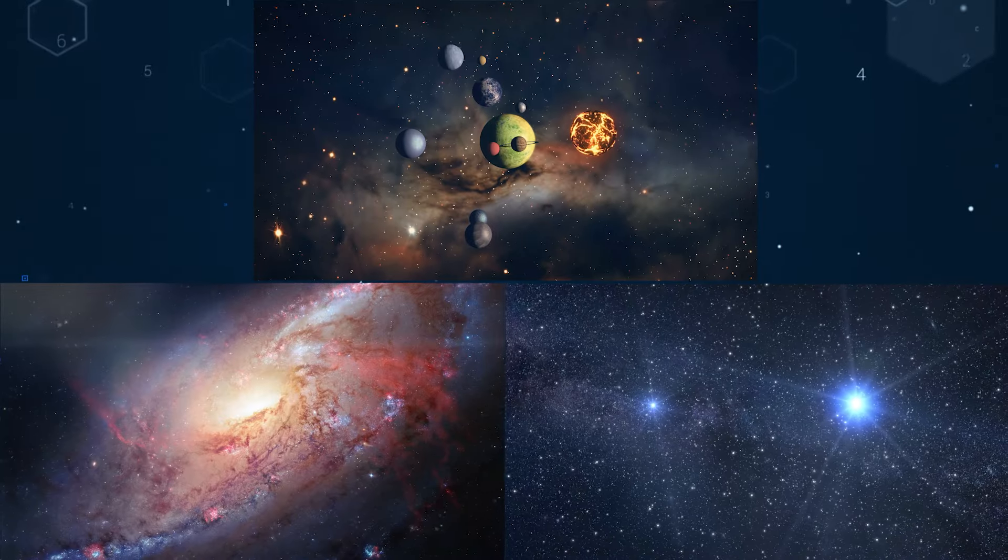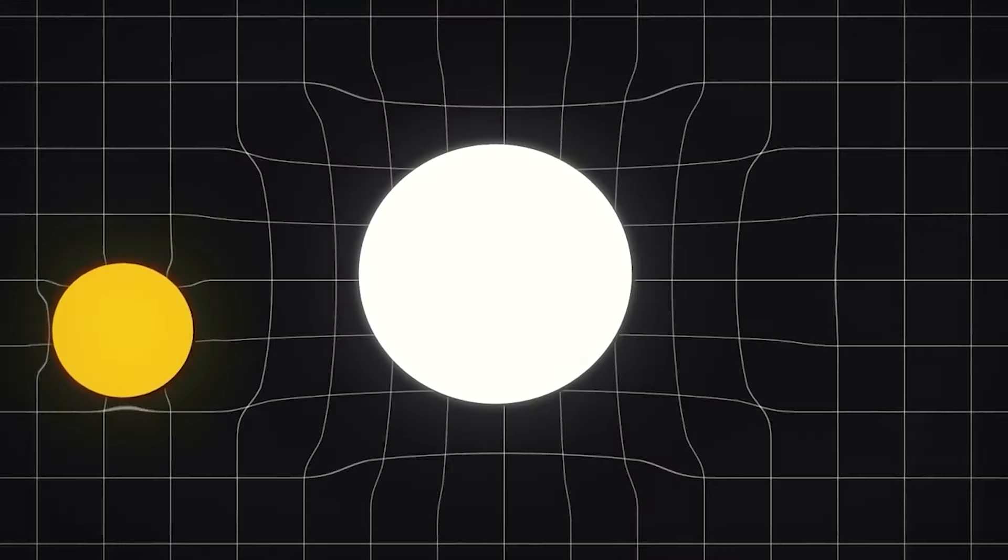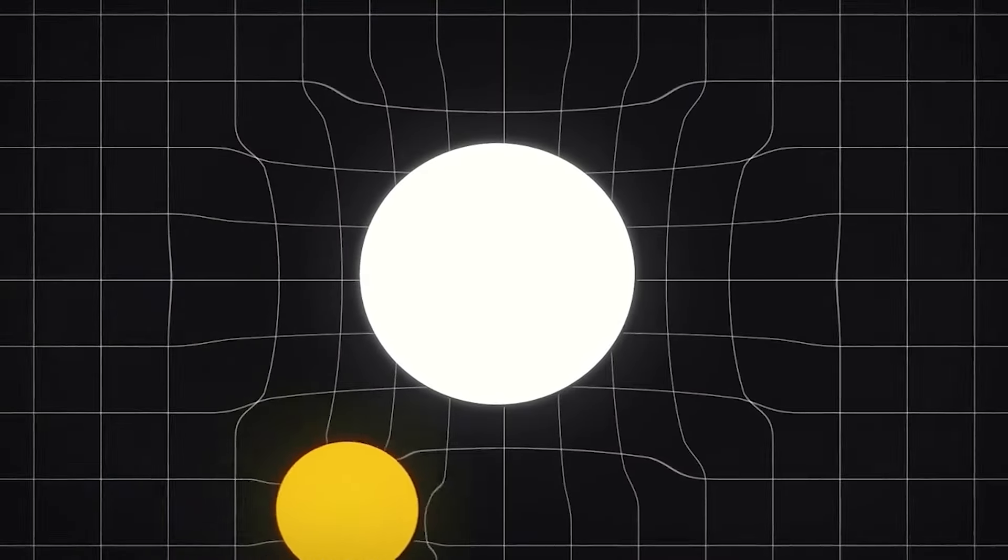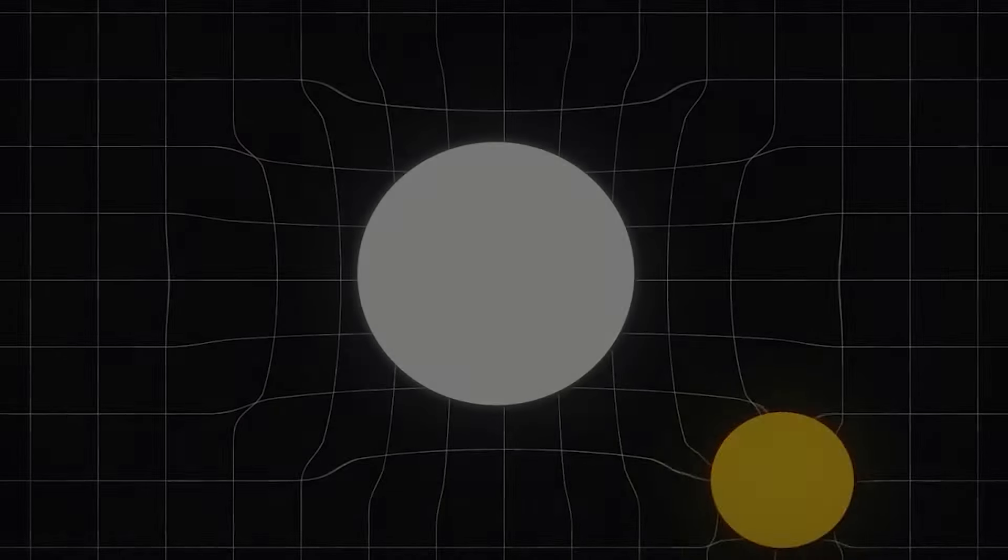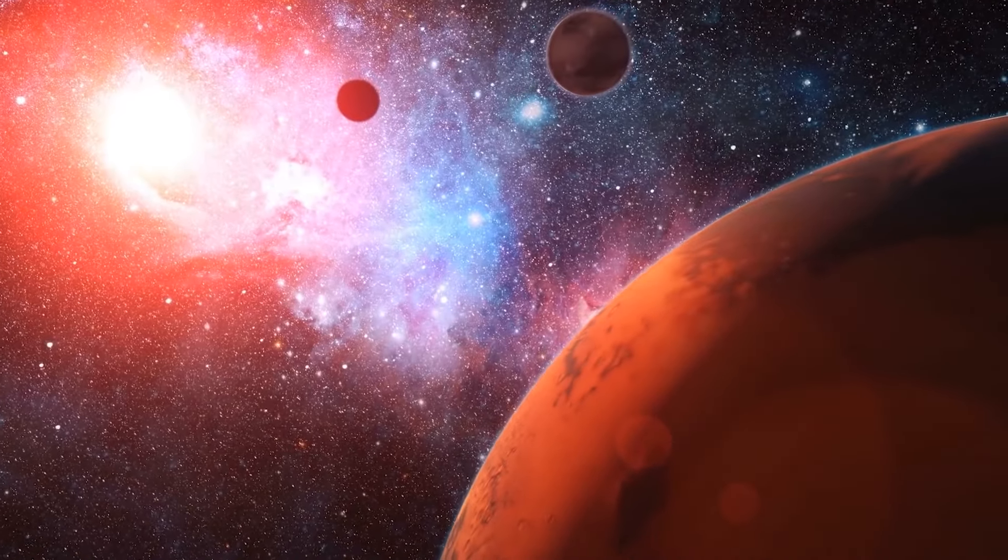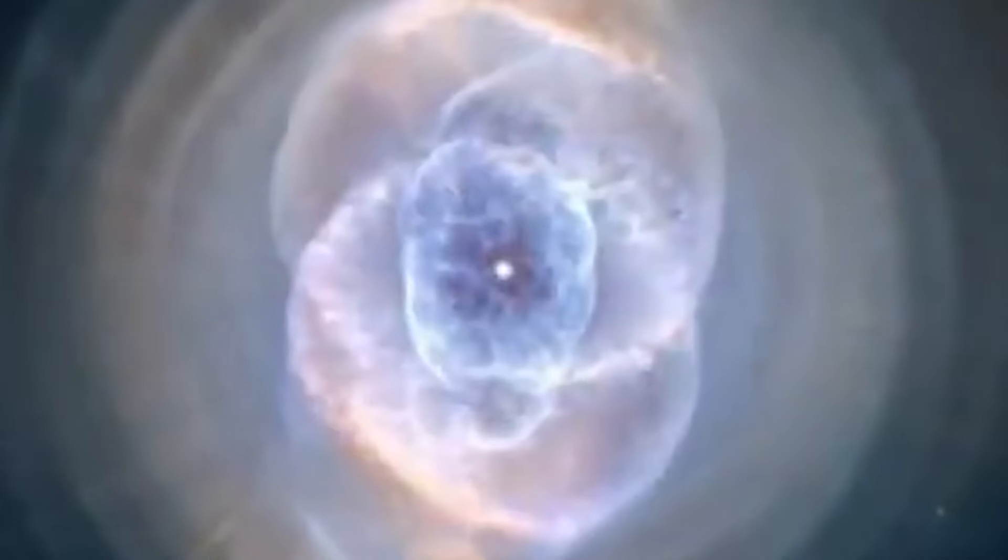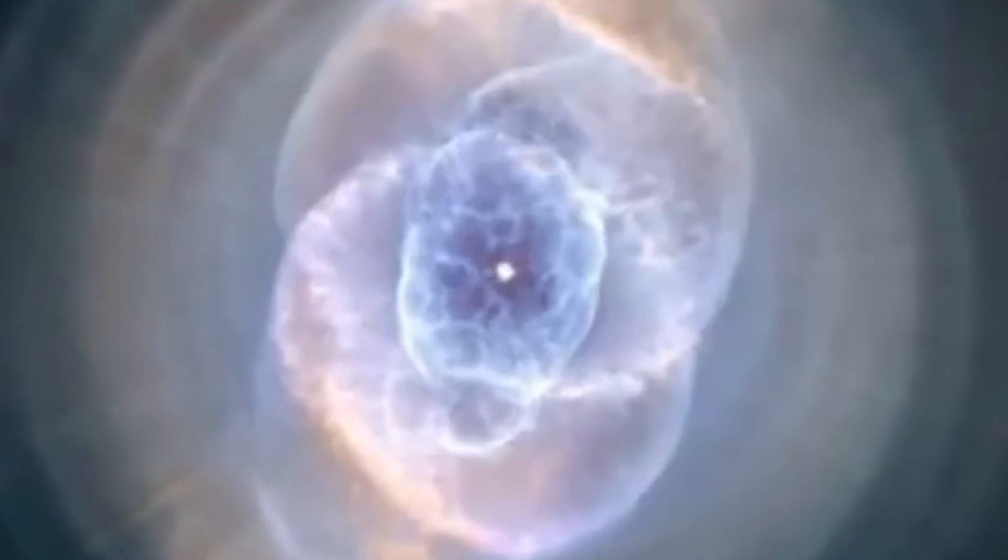You see when we look at the universe and count all the stuff we can see, stars, planets, galaxies, etc., we find that there's not enough of it to explain all the gravity that glues everything together. There must be something else out there that we can't see. Something sneaky and mysterious that makes up most of the weight of the universe. We call this dark matter.